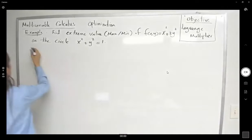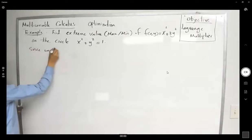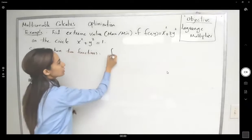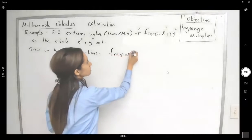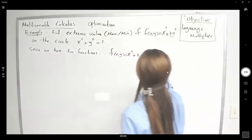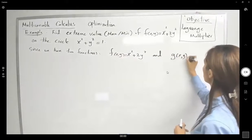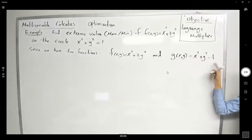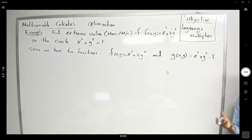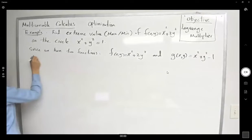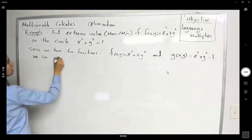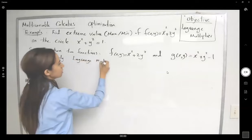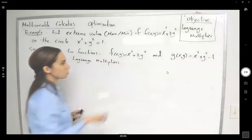Since we have two functions: one is f(x, y) = x² + 2y², and the other is the fixed constraint g(x, y) = x² + y² − 1. We cannot change this function — it is fixed. We can apply Lagrange multipliers.